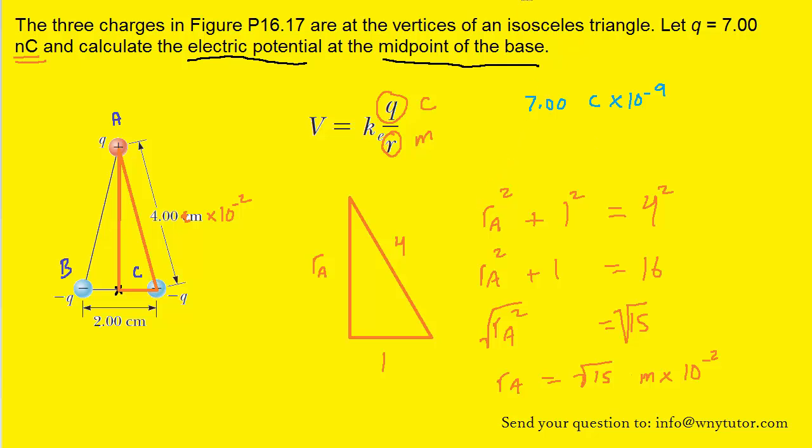Finally, we'll note that K has a value of 8.99 times 10 to the positive 9. So we have all the values. We're going to be ready to calculate the electric potential produced by each point charge.